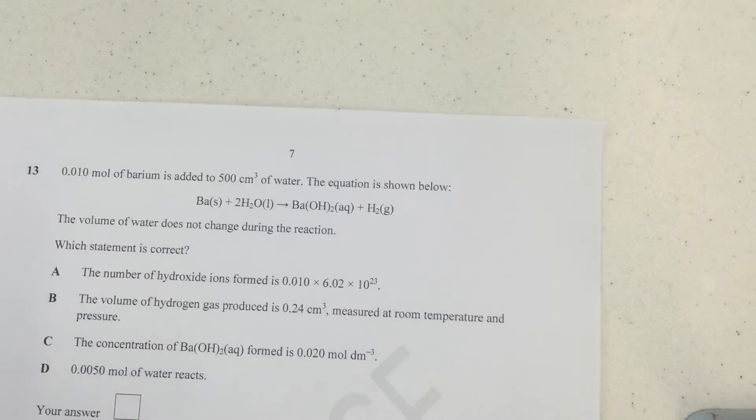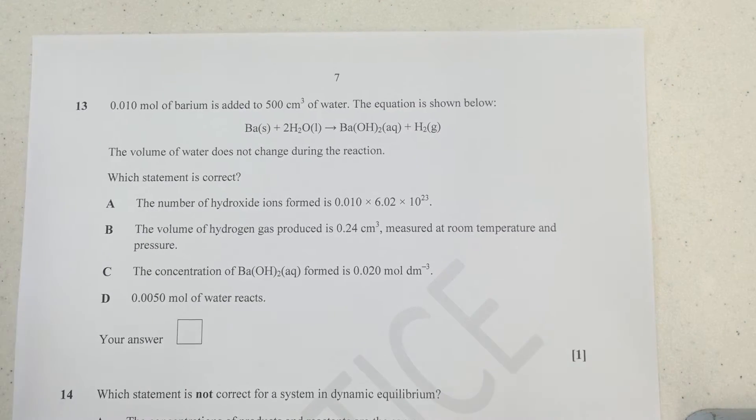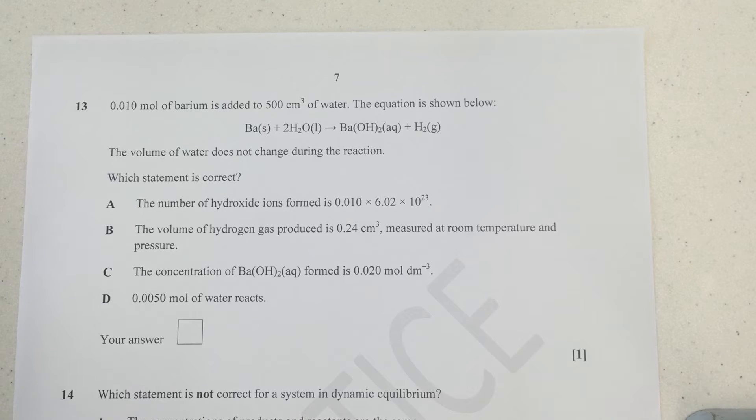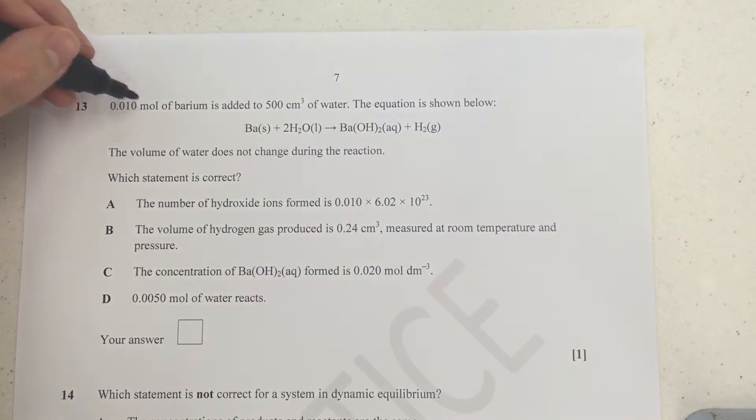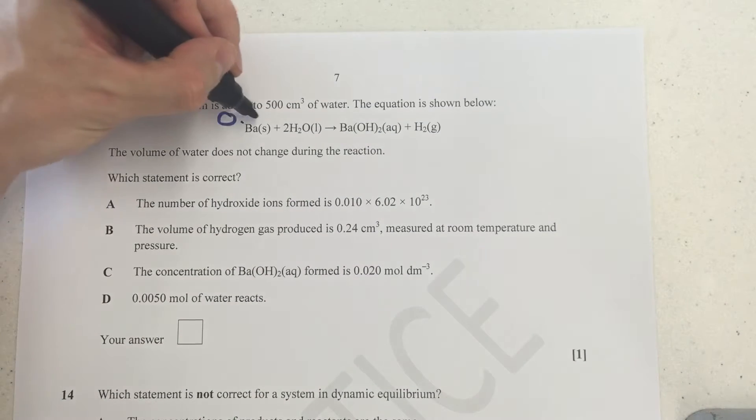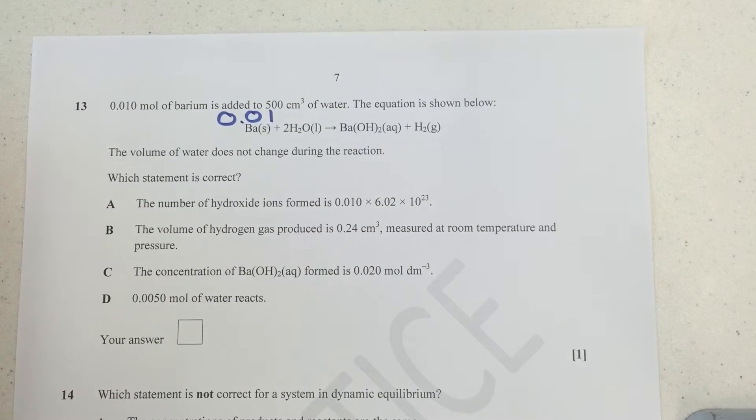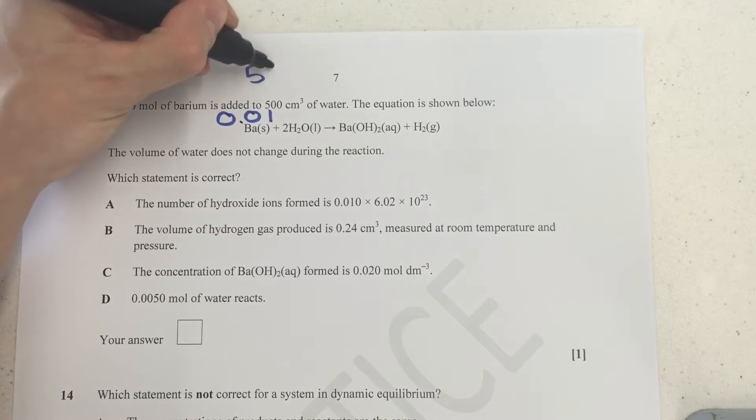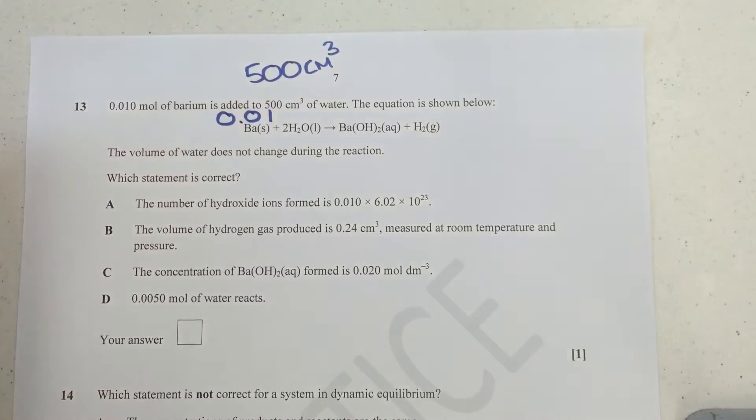Moving on then to question 13. For question 13, we've got quite a lot of maths associated with this one, so make sure you've got yours to hand. Now we are actually told, right at the start of this, 0.01 mol of barium is added, so what I tend to do is I tend to write the numbers in. You're told the volume of water does not change, so that means it's fixed at this 500. I'm just going to write that up there, and been asked which statement is correct, and everything here appears to relate to the moles of other reactants and products that are written in this equation.